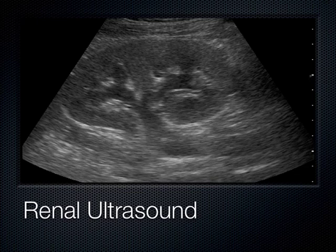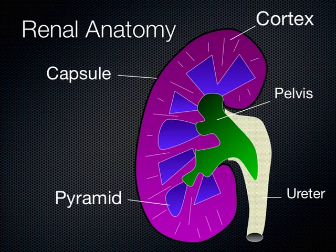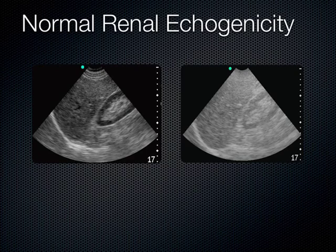Hyperechoic means bright, hypoechoic means dark, and anechoic means black. The capsule is out here, the renal cortex is here, and these renal pyramids coalesce to drain urine into the renal pelvis — also called the renal sinus — which then drains out the ureter. Normally, the cortex of the kidney is less echogenic than the next-door neighbor, which is the liver on the right or the spleen on the left.